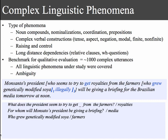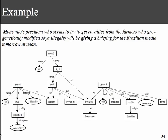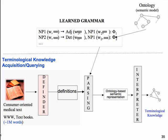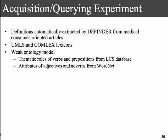We did around 100 complex utterances and linguistic phenomena were covered, but we also encountered a lot of ambiguity. For example, in the sentence 'Monsanto president who seems to try to get royalties from the farmers who grew genetically modified soil illegally will be giving a briefing for the Brazilian media tomorrow at noon' — 'illegally' can be associated with either 'grew' or 'get', so you'll still have ambiguities. In the terminological knowledge acquisition experiment, we extracted definitions not only from dictionaries but directly from online consumer-oriented medical text using a rule-based system called Definder.